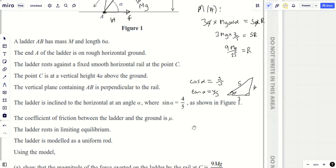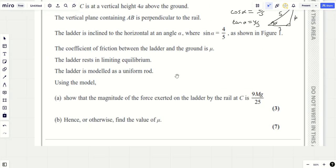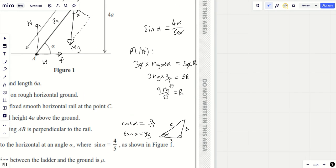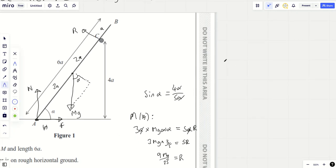9mg over 25—we've shown it. There we go, r is 9mg over 25. Hence or otherwise, find the value of mu. Have we taken moments? Yes we have. In which case, we can do everything else with lefty-righties, uppy-downies. So let's get these equations right and you're going to get the question right.